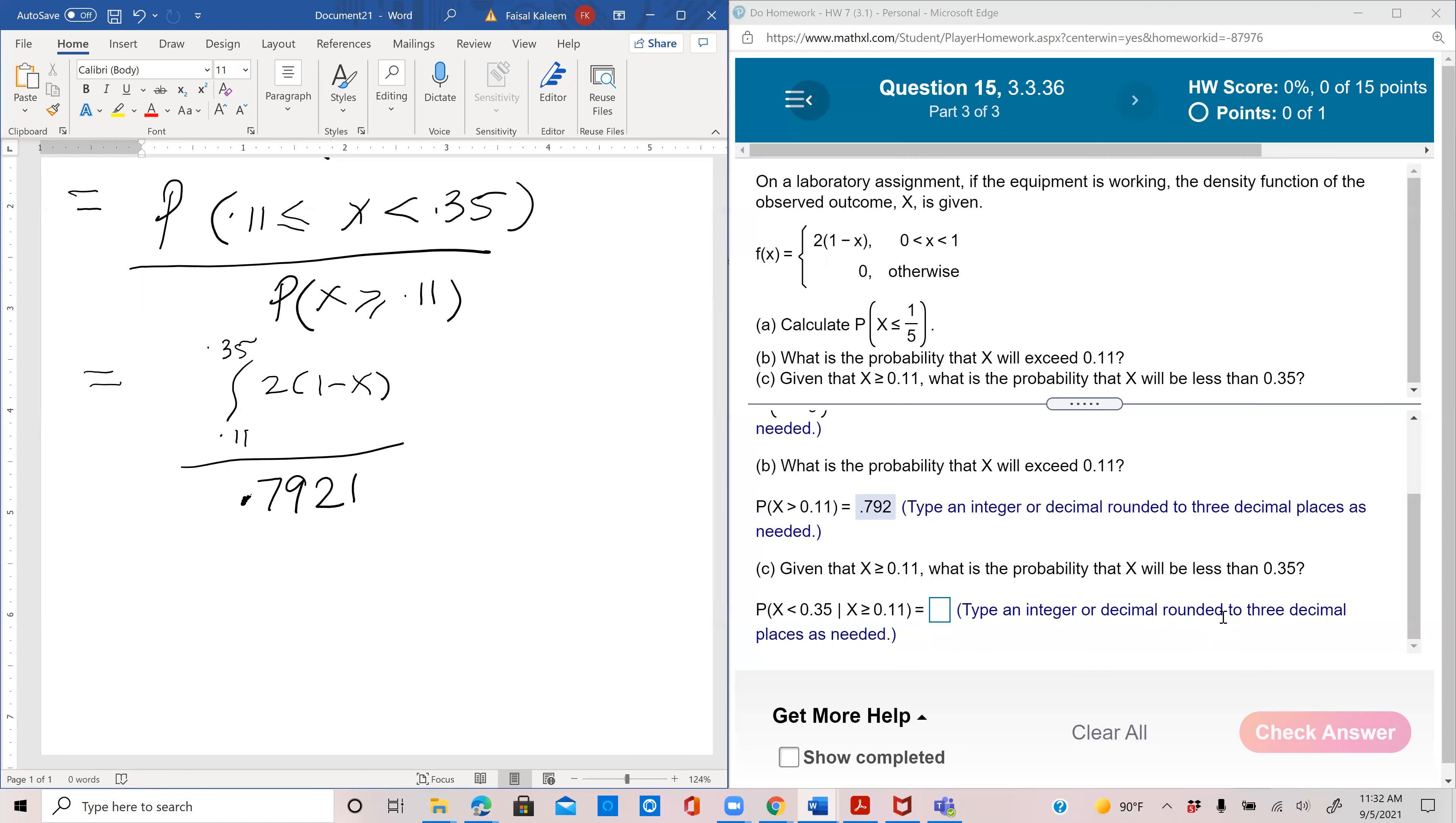Because in general, if you need the final answer to three decimal places, it's good practice to have one more decimal place at least in the intermediate answers. So we've integrated this a bunch of times, it ends up being 2x minus x squared. Now we have new limits 0.11 to 0.35, and you're dividing it by 0.7921.